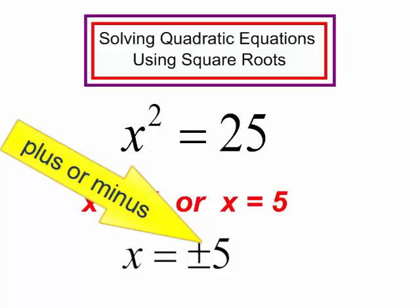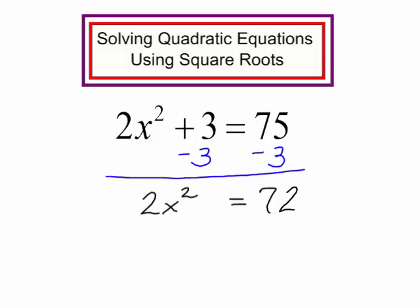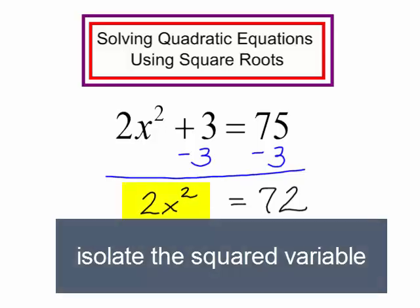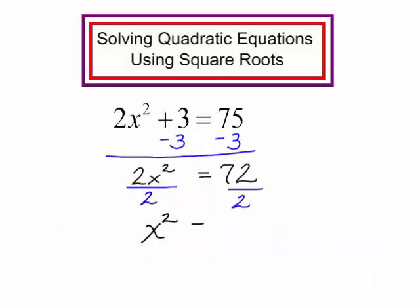Let's try another problem: 2x squared plus 3 equals 75. I see that this is a quadratic equation — I have an x squared, but I do not have a variable to the first power, so I can solve this using square roots. To begin, I need to isolate the squared term. I will subtract 3 from both sides, giving me 2x squared equals 72. The squared term is still not by itself — it is being multiplied by 2, so I will divide by 2.